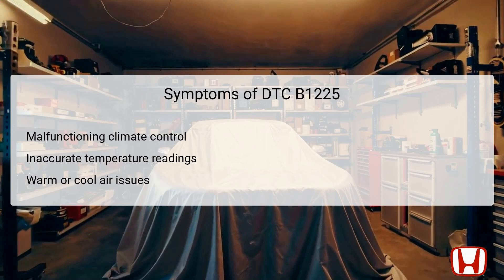The symptoms associated with DTC B1225 primarily revolve around issues with the climate control system in the Honda Accord. One noticeable symptom would be malfunctioning climate control, where the system fails to provide appropriate heating or cooling, making it uncomfortable for the occupants. Additionally, inaccurate temperature readings may be displayed, resulting in a lack of trust in the system's ability to maintain a comfortable cabin environment. Drivers may also experience issues with either warm or cool air continuously emitting, despite adjustments being made to the climate settings.